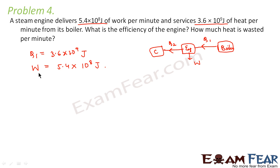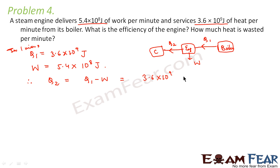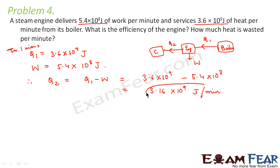How much heat is wasted per minute? The heat wasted equals Q1 − W = 3.6 × 10^9 − 5.4 × 10^8, which comes out to be 3.06 × 10^9 joules. So this much heat is wasted per minute. This is one part of the problem.